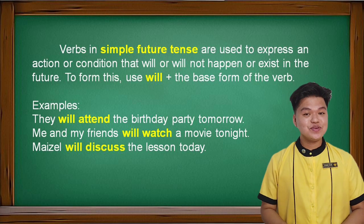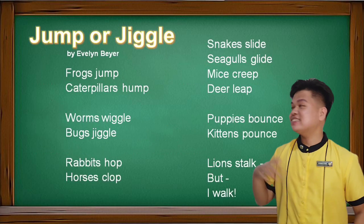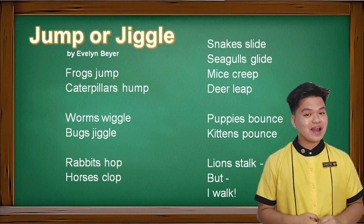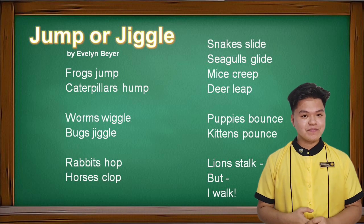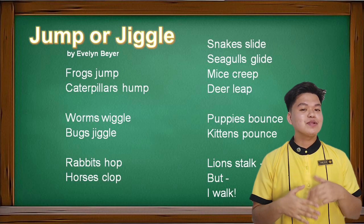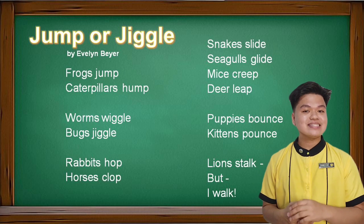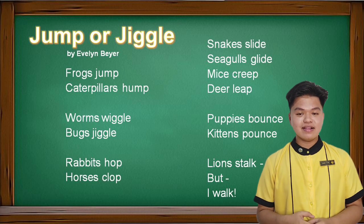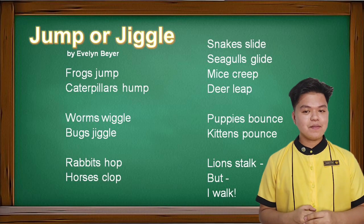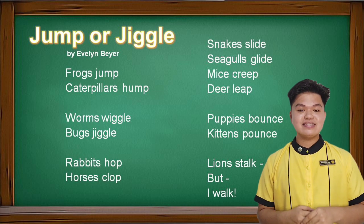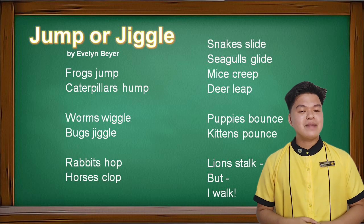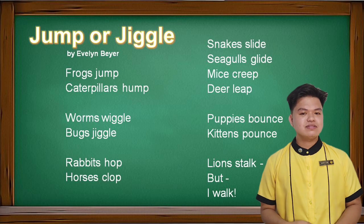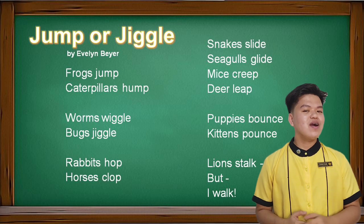I am confident that you already understood our discussion. As you can see here, we have a poem: 'Jump or Jiggle' by Evelyn Bayer. I will read the poem and you will write down all the verbs in this poem, then form them in simple past, simple present, and simple future. Frogs jump, caterpillars hump, worms wiggle, bugs jiggle, rabbits hop, horses clop, snakes slide, seagulls glide, mice creep, deer leap, puppies bounce, kittens pounce, lions stalk — but I walk.